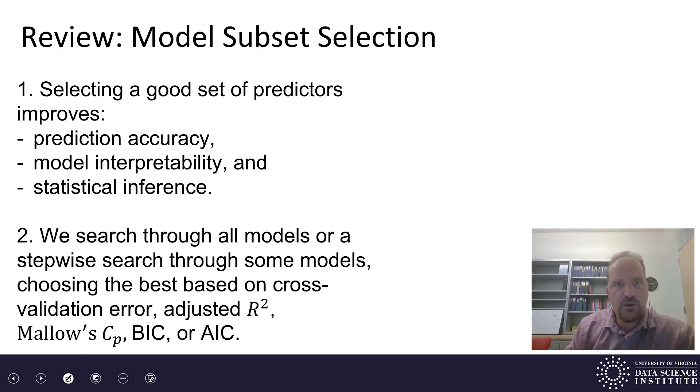So review. We've talked about model subset selection. That's the process of selecting a good subset of our predictors. Often when you're given a linear regression model with a large number of predictors, some are useful and some are not useful. It's important to remove the not useful ones. This improves prediction accuracy, model interpretability, and statistical inference. The process of model selection involves searching through all models or some stepwise search through some models, choosing the best models based on either cross-validation error, adjusted R-squared, Cp, BIC, or AIC. Thank you very much for watching.